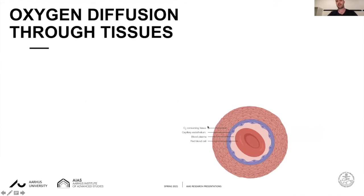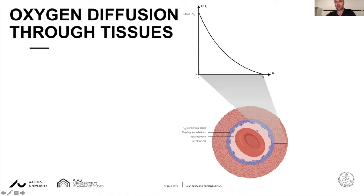The oxygen transport cascade is a multi-step process where oxygen is first taken up into the bodies of animals either over the gills or over the lungs. It is then transported via the blood to the respiring tissues. The final step is the diffusion of oxygen from the red blood cell into the respiring tissues, where oxygen is gradually depleted over distance. At the capillary wall, the partial pressure of oxygen is very high, but as oxygen diffuses into the tissues it is gradually taken up into the cells and oxygen levels are reduced, eventually reaching zero — at which point cells cannot function because they lack sufficient oxygen to generate energy.